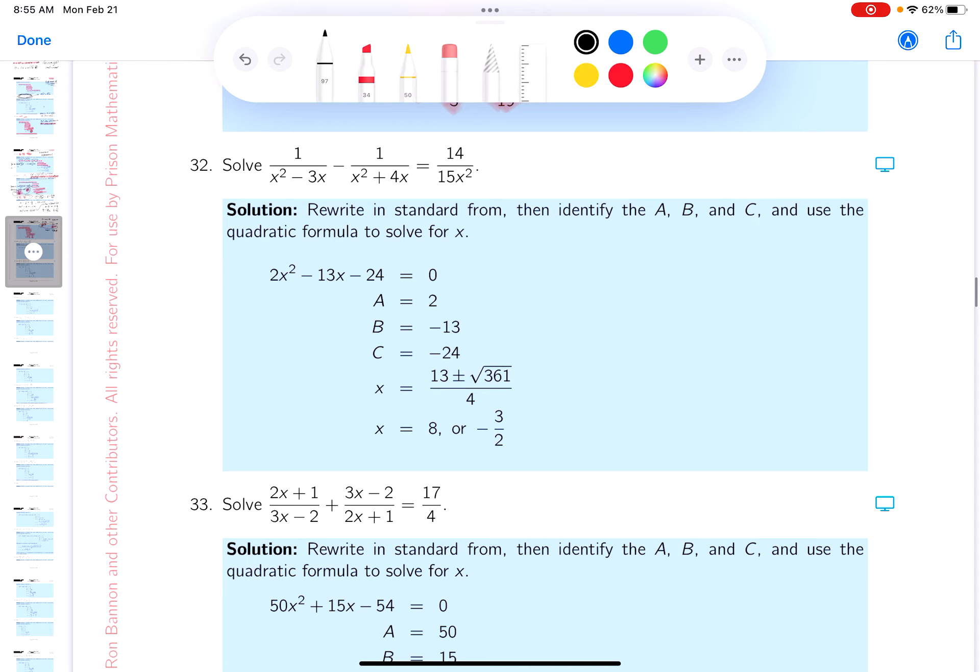Okay, let me start you off with the LCD. I would factor the denominators, and it's going to be x, and then you would get x minus 3. That's the first denominator factored. The second one would be x, x plus 4. And this last guy is 15x squared. So the LCD would be x squared, x minus 3, x plus 4.